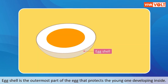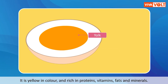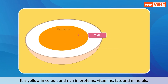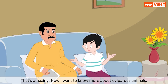The egg shell protects the young one developing inside. The yolk is the middle part of the egg that provides nutrition to the developing baby. It is yellow in color and rich in proteins, vitamins, fat, and minerals. Albumin is a white jelly-like substance rich in protein that protects the yolk and the developing baby.